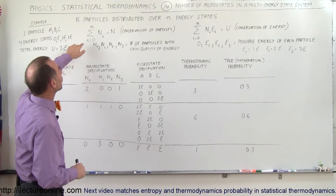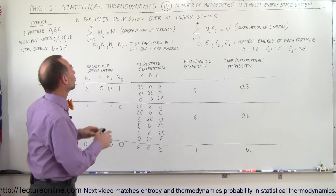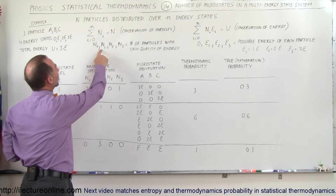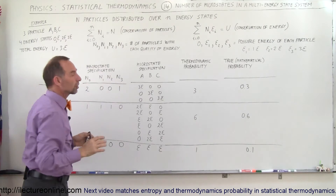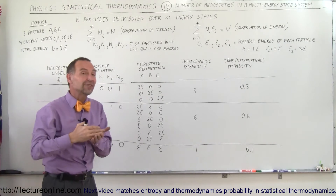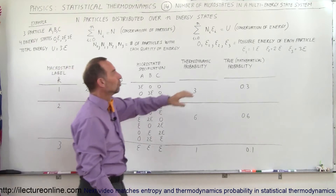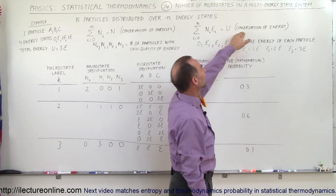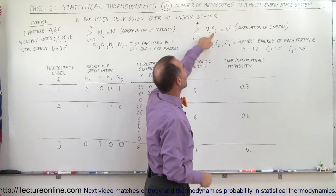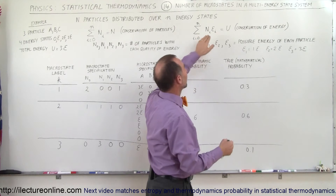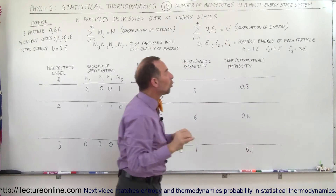The first constraint is that we have a conserved total number of particles. When we calculate all the particles in each energy state, they should always add up to the total number of particles. The second condition is that if we add up the energy of each particle, it should equal the total energy U of the system — energy must be conserved.